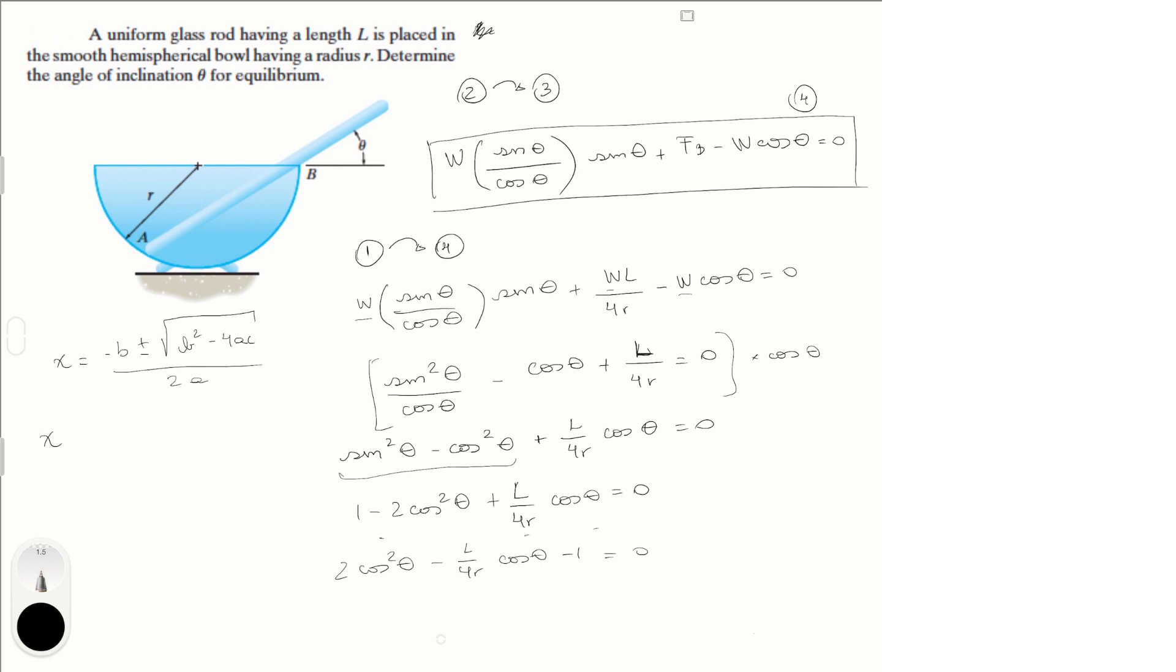We know that X, this here, is equal to cosine of theta. A is equal to 2, right here. B is equal to minus L over 4R. And C is equal to negative 1.